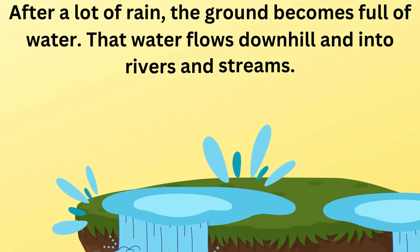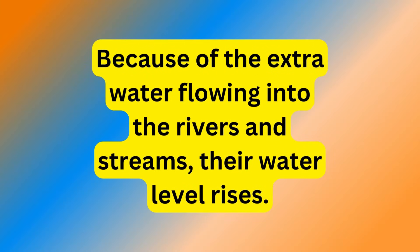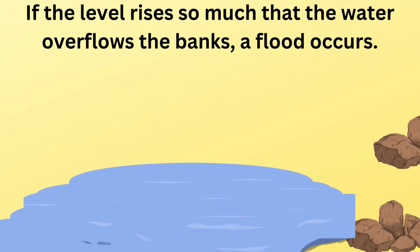After a lot of rain, the ground becomes full of water. That water flows downhill and into rivers and streams. Because of the extra water flowing into the rivers and streams, their water level rises. If the level rises so much that the water overflows the banks, a flood occurs.